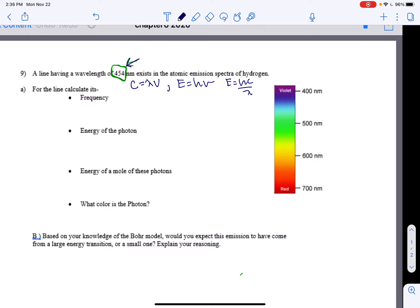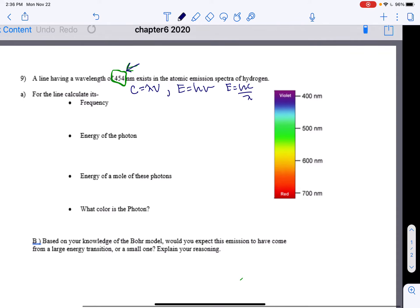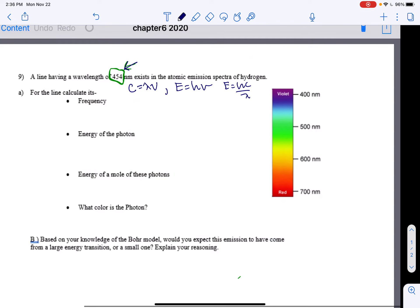And then I want you to find these values. So for the line, calculate its frequency. So frequency, you'll remember, is this little v right here. So we're going to use these equations, but I need to rewrite it for frequency. So frequency equals C over lambda. C is the speed of light, and for this problem, I would use nanometers for sure, since this gave me the length in nanometers.